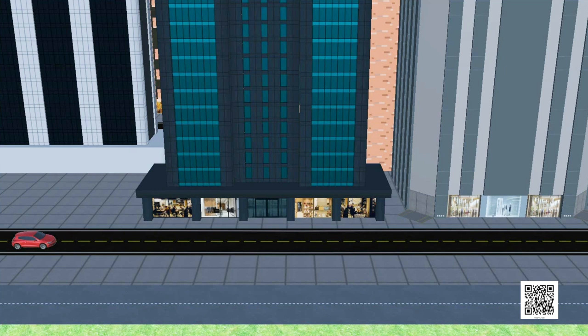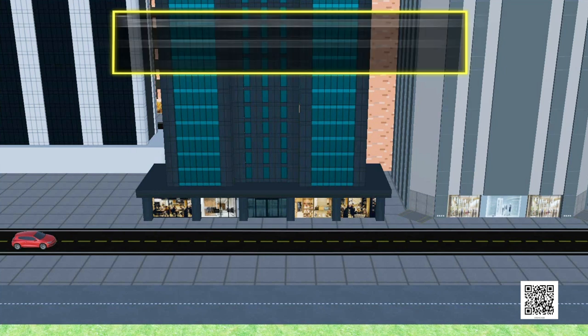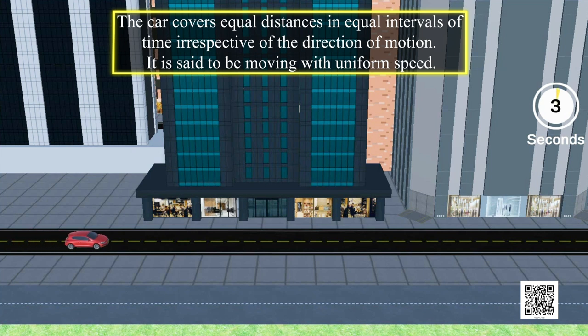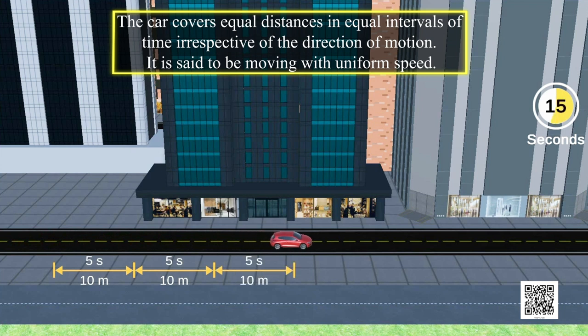Let us see uniform motion in a car. The car covers equal distances in equal intervals of time, irrespective of the direction of motion.